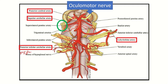Ascending further, we see the posterior cerebral artery, and very close to it is a nerve — the oculomotor nerve. This relation is very important and is tested in MRCS questions: the oculomotor nerve encircles near the posterior cerebral artery. We can also see the superior cerebellar artery, and the trigeminal nerve root is very close to the superior cerebellar and posterior cerebral arteries.